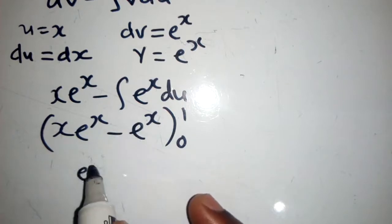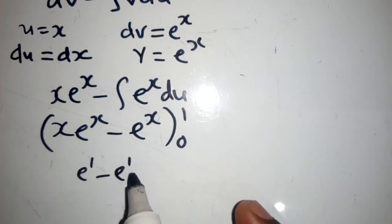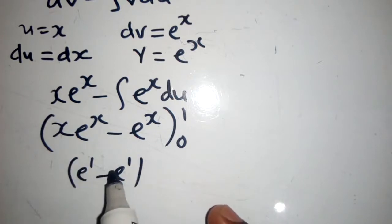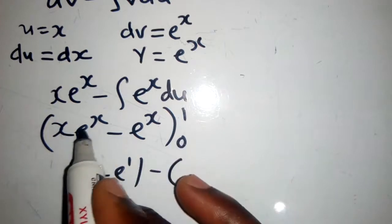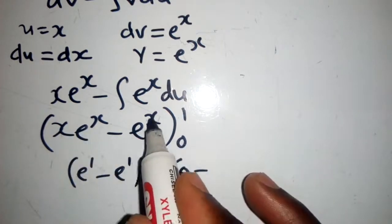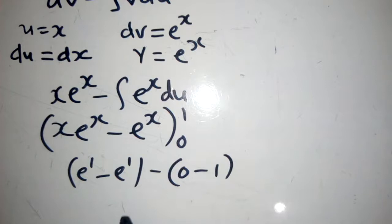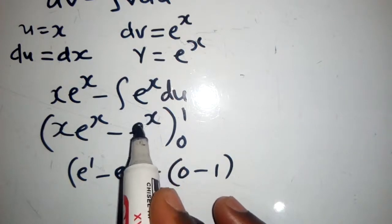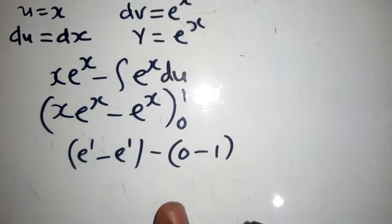From this point we can plug them in. Once we put one here, we'll have something like this because this will be e to the power one. Minus, we put zero here, we'll have zero. We put zero here, we'll have one, because here it will be e to the power zero, which is equal to one.